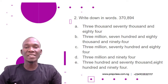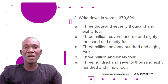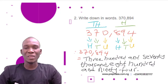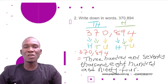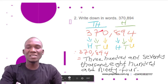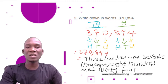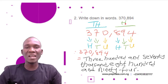This is more like question number one, but now we need to convert from figures to words. We have 370,894. We will break this number into two parts. Whenever we have a comma, the first three digits represent hundreds and the next three digits stand for thousands. This gives us 370 under thousands and 894 under hundreds.